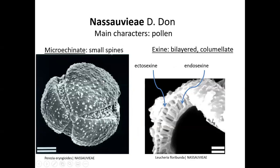If you make a cut of the pollen grain, you will see the wall of the pollen grain, which is called the exine. It is a bi-layer, constituted by two layers: the ectosexine and the endosexine. Both have columns — they are columellate.